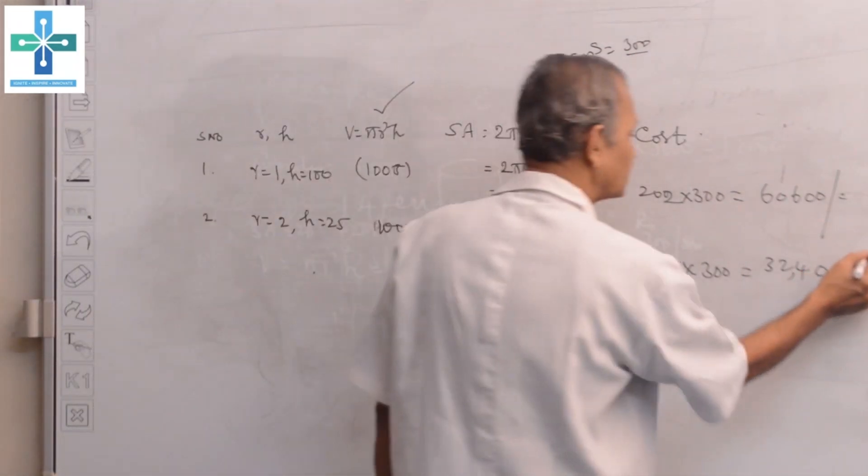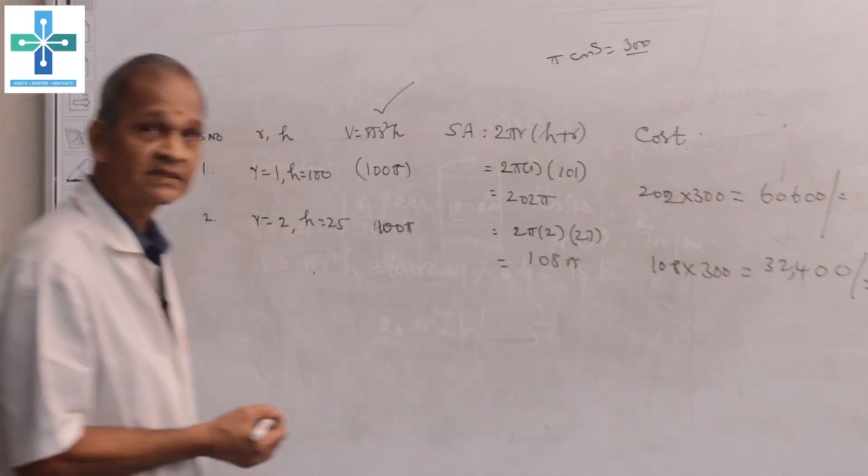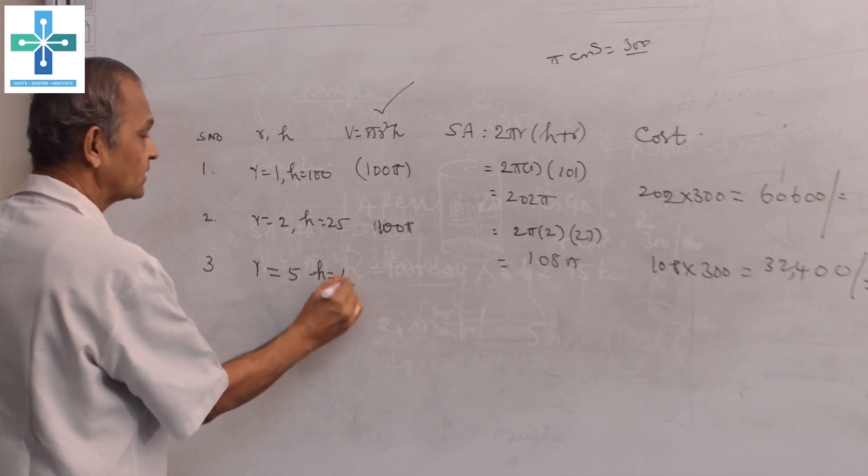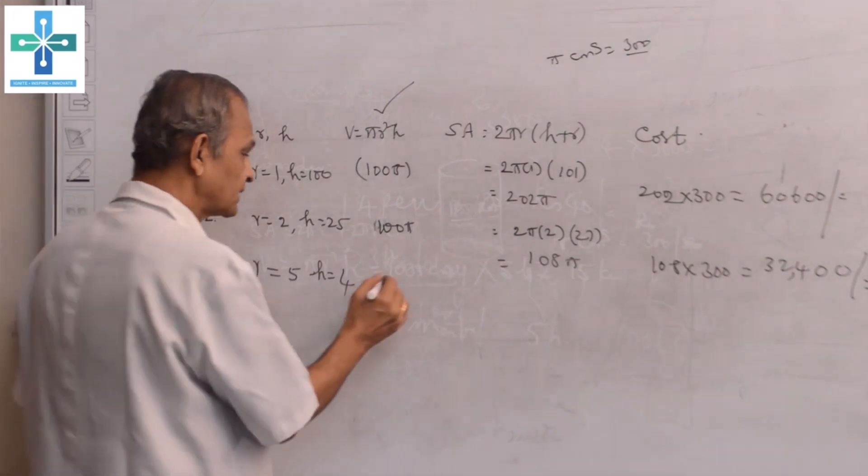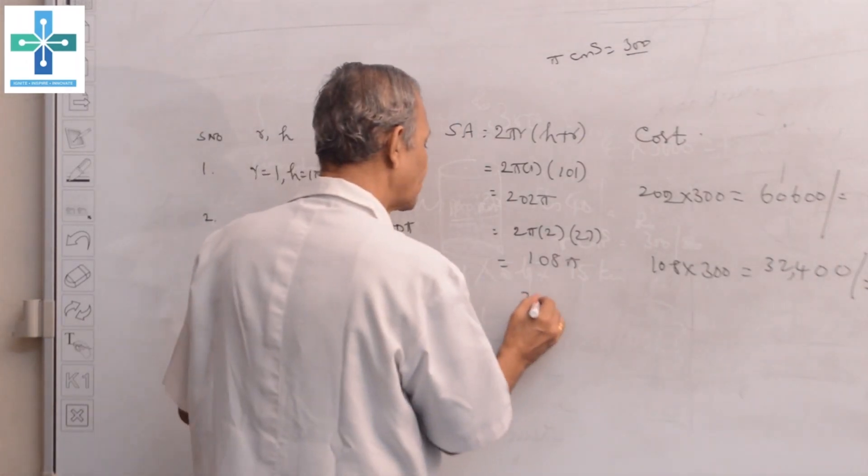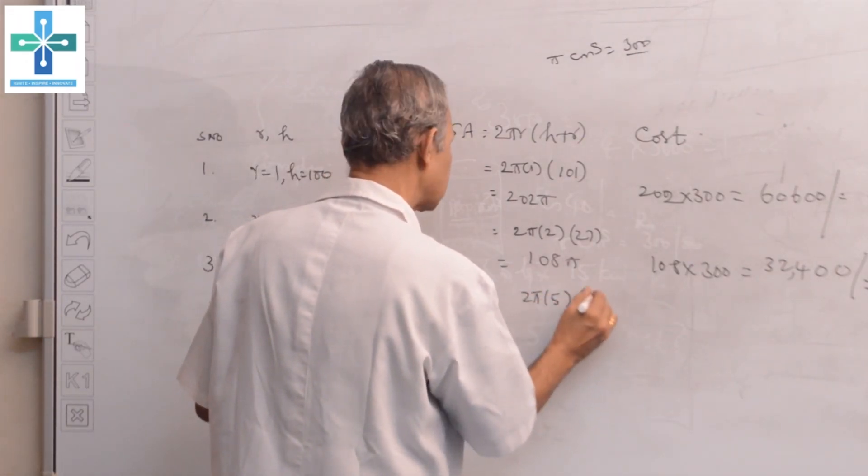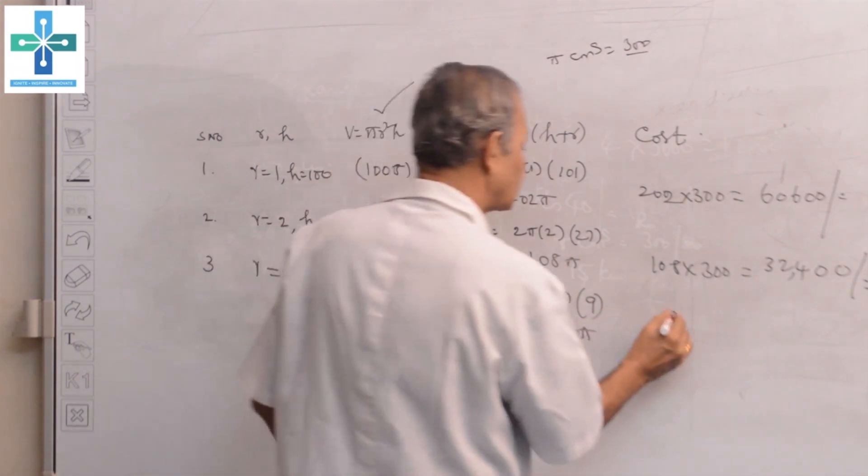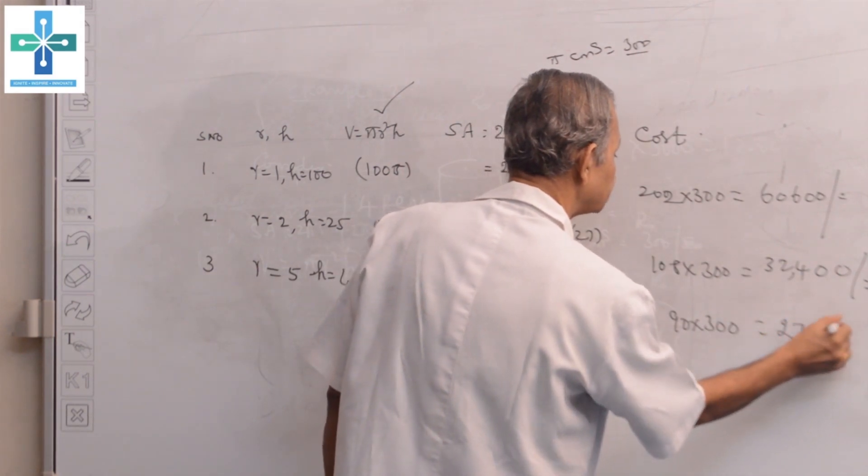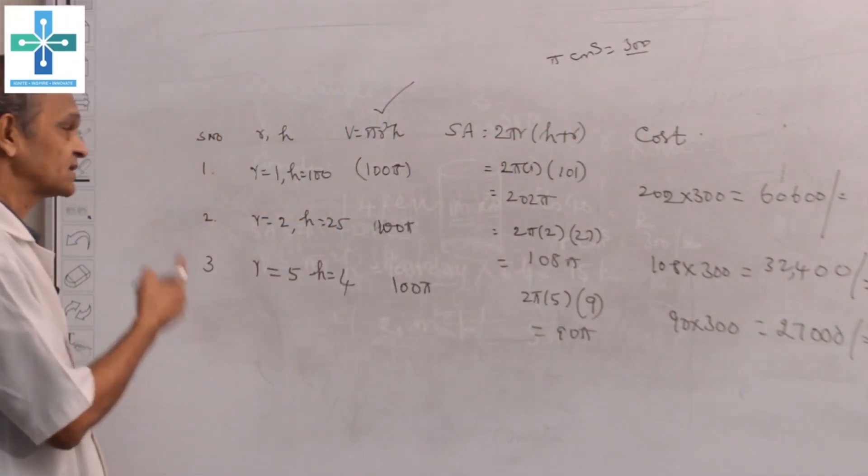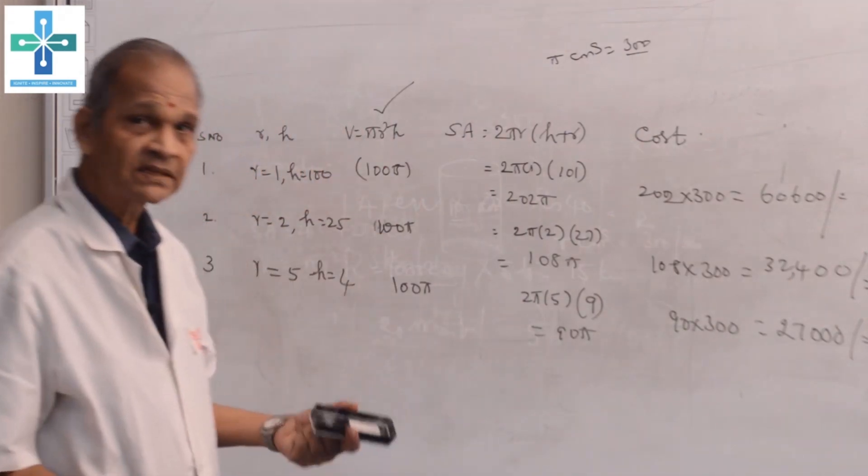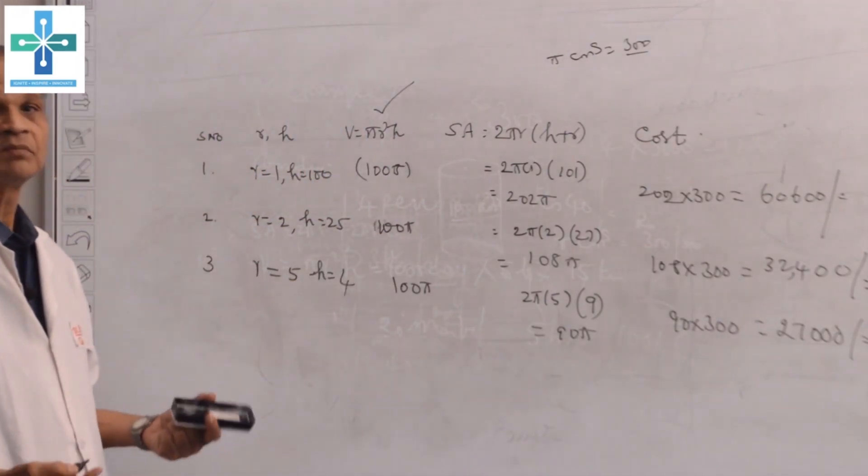Third case: suppose if I take r = 5 and h = 4. We get 100π once again. Here 2πr, r is 5, h + r is 9 equals 90π, which is 90 into 300 equals 27,000 rupees. We see that when the radius is going on increasing, the cost of construction is decreasing.